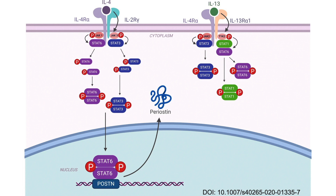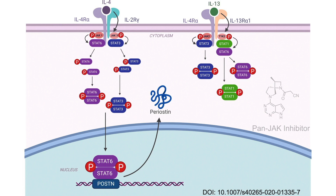Dalgocitinib works by blocking activation of the JAK-STAT signaling pathway, which contributes to the pathogenesis of chronic inflammatory skin diseases. The molecule is a Janus kinase (JAK) inhibitor that inhibits all four members of the JAK family: JAK1, JAK2, JAK3, and tyrosine kinase 2.